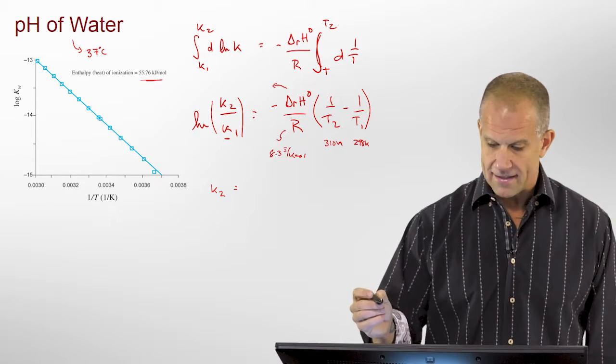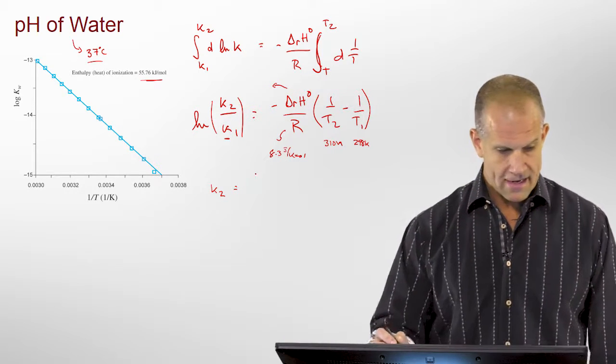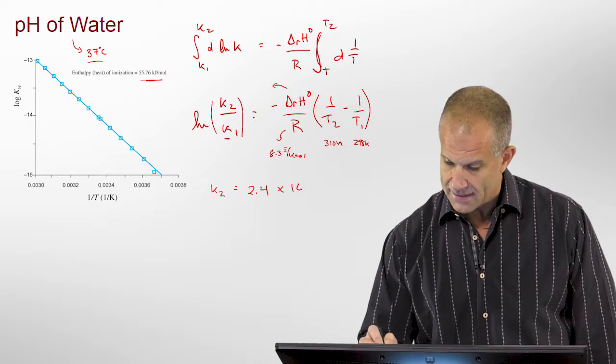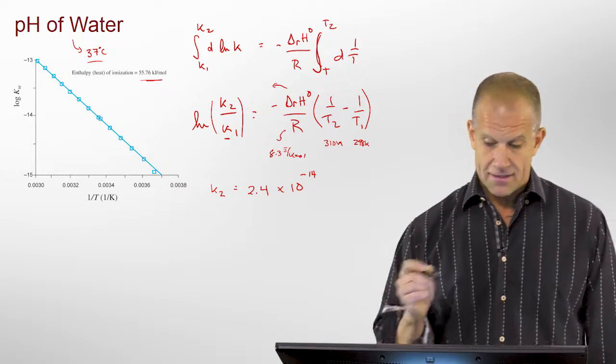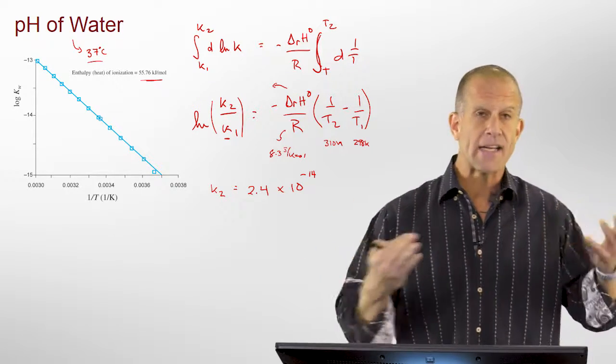And, what we'll find is that we'll get a K2, if we do this for 37, of 2.4 times 10 to the minus 14. So, it's not 1 times 10 to the minus 14, which is K1, what we started at, it changed some.